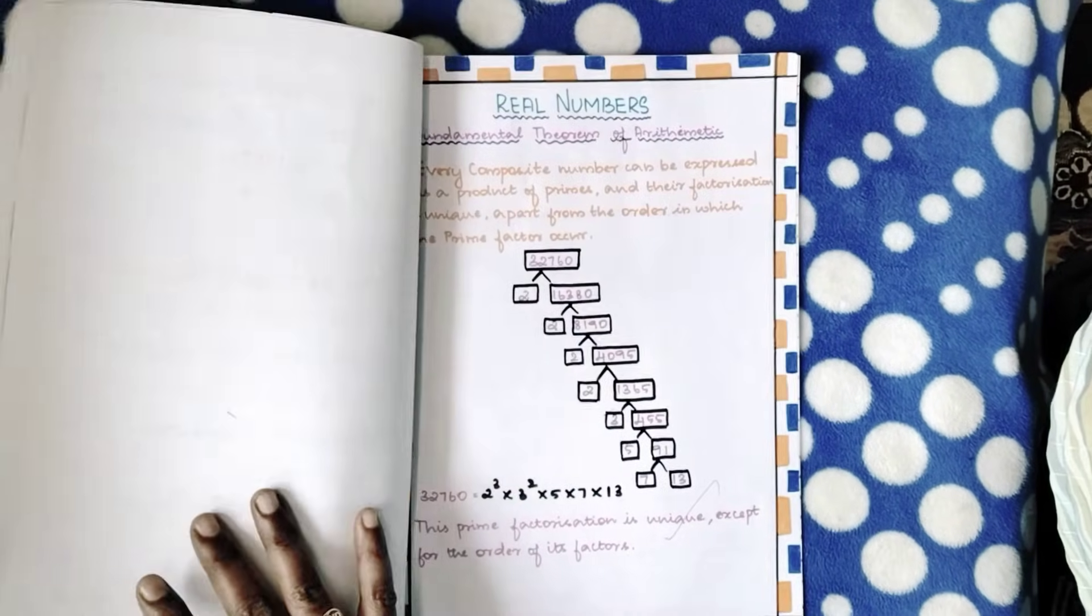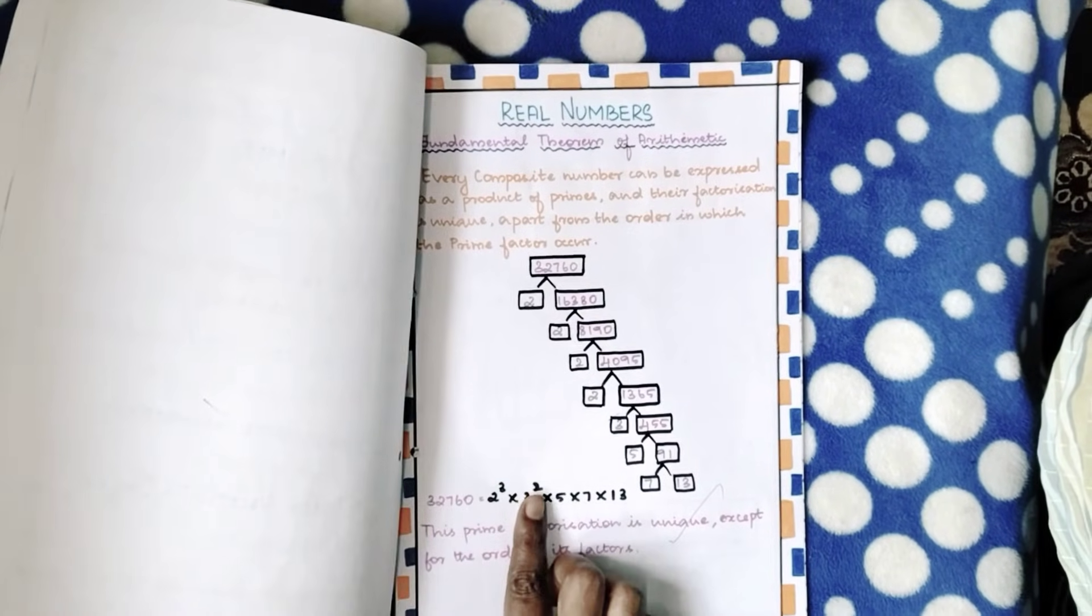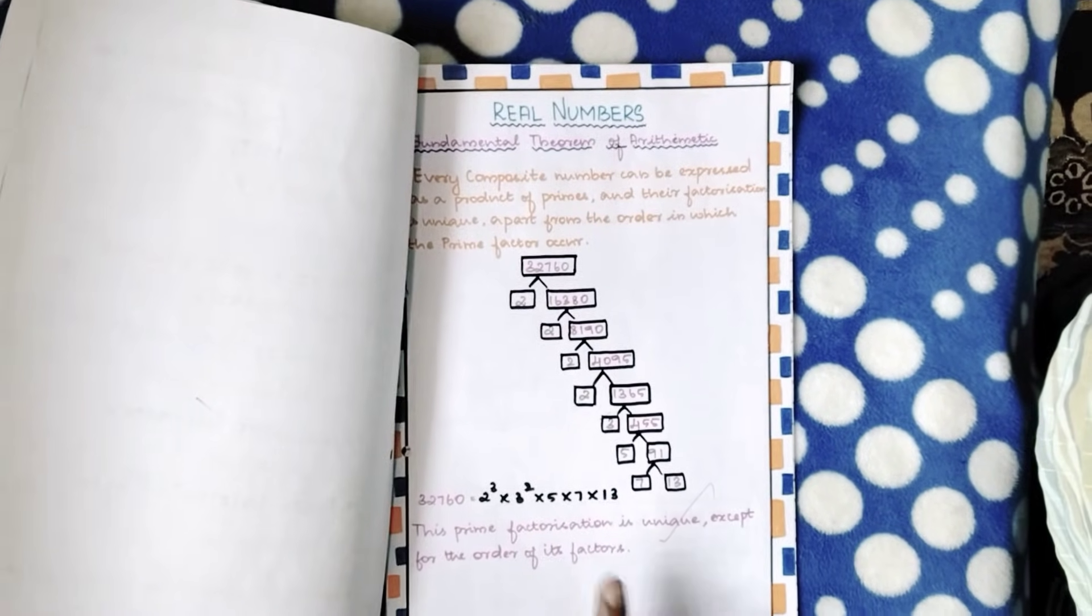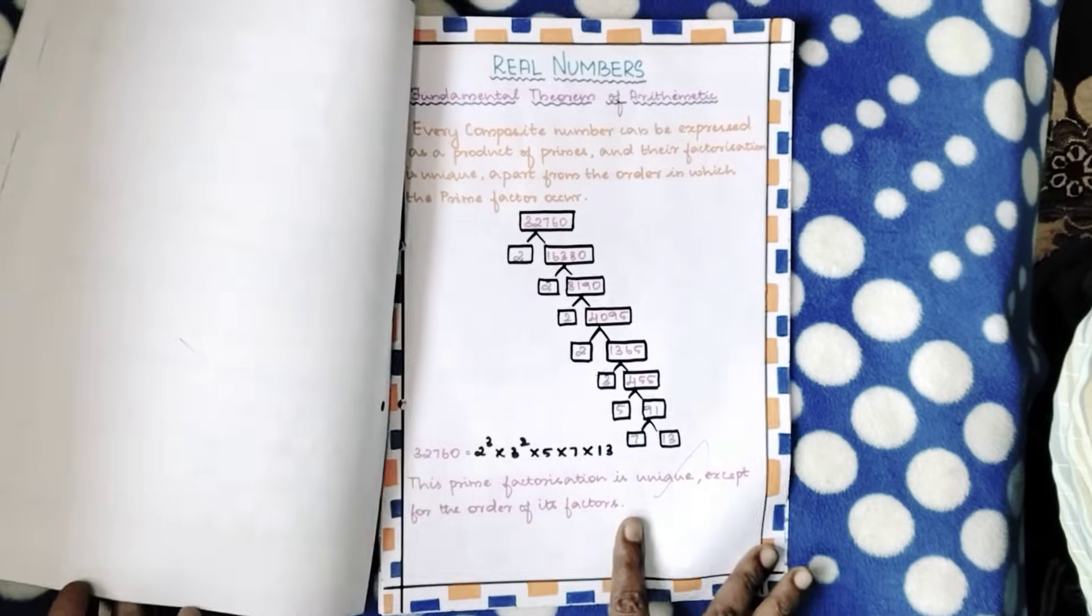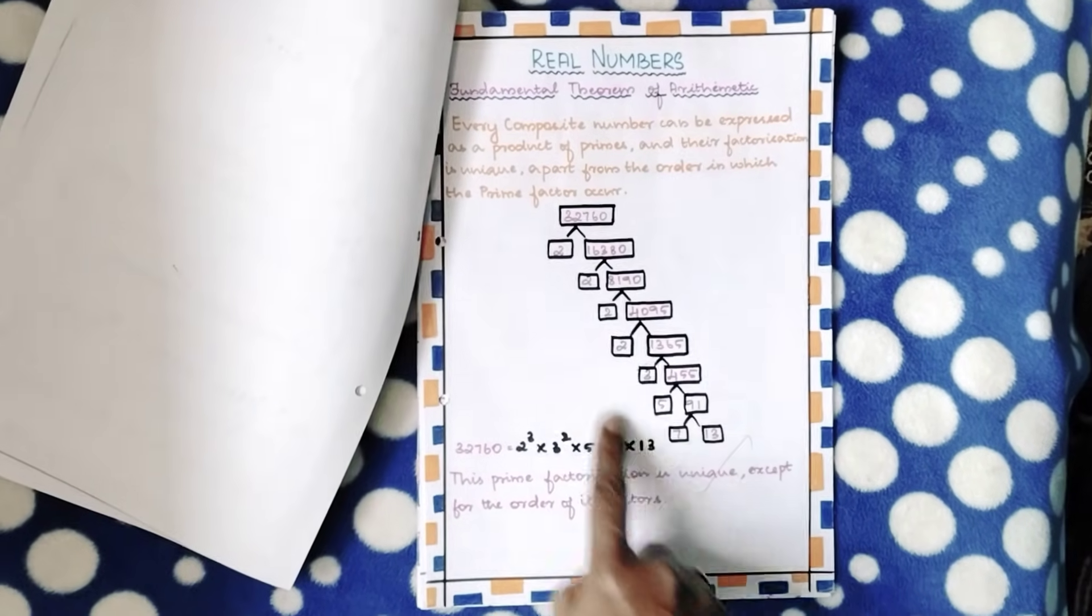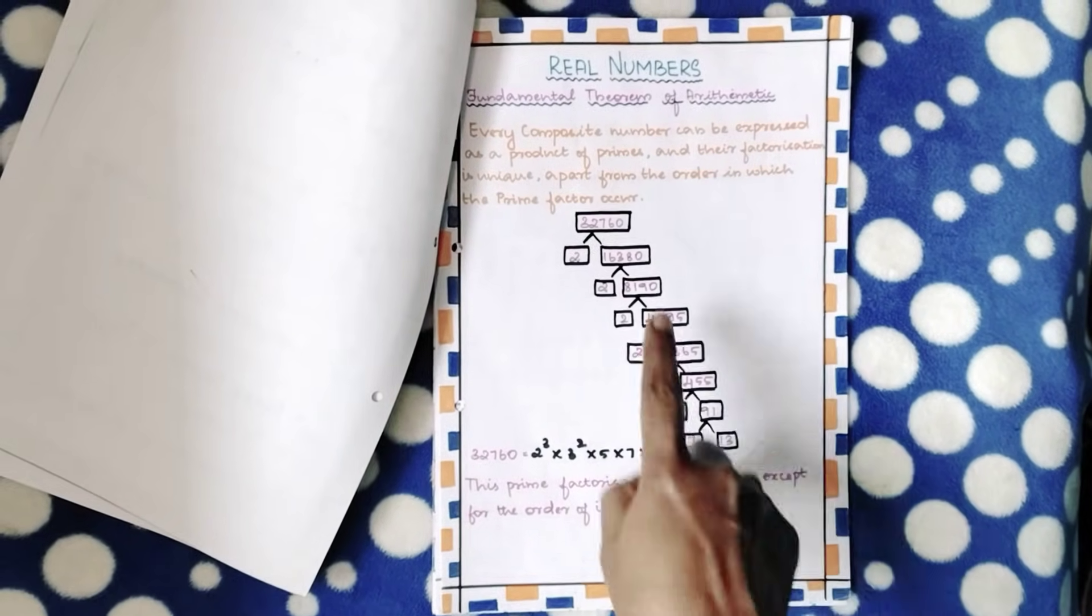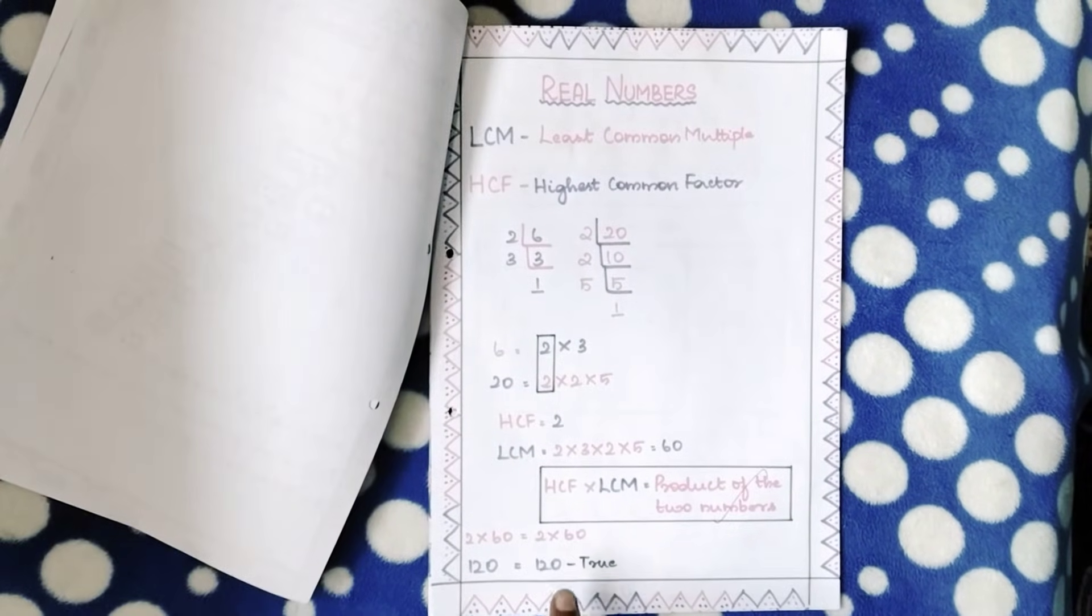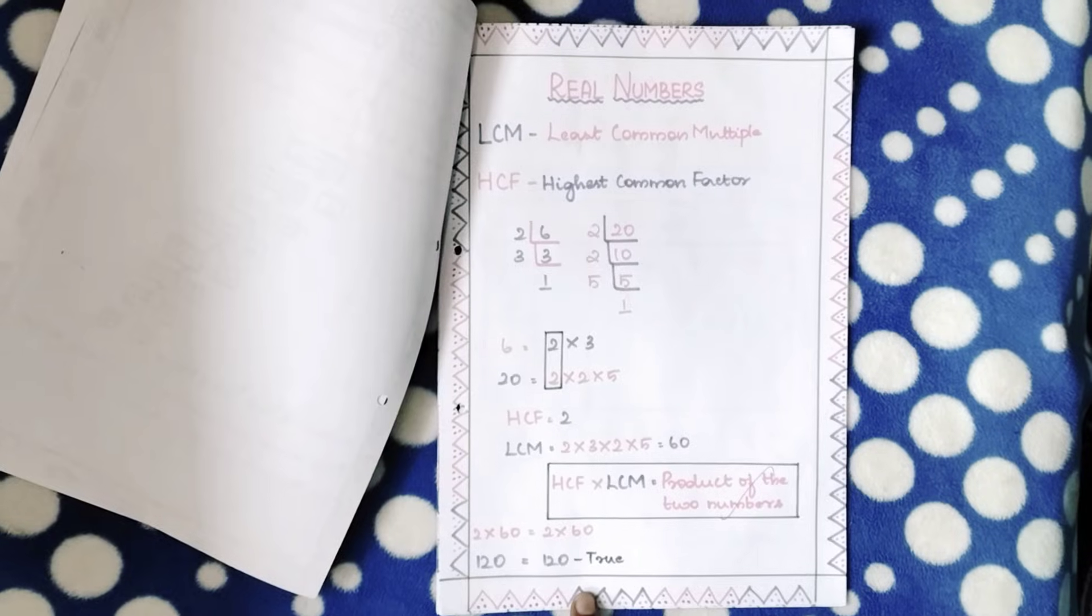The first one is on real numbers. She's done the fundamental theorem of arithmetic - that was actually deleted for last year and this year, but she's done it as an extra page. She's explained the fundamental theorem of arithmetic with an example. Page 2 on real numbers, she's proved the concept LCM into HCF equals product of the numbers with a very simple example.